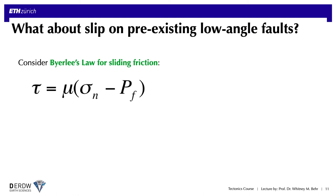Now let's think about the possibility of reactivating existing misoriented faults. We know that many extensional regimes have had an earlier tectonic history, perhaps dominated by thrust faults. So maybe these normal faults are pre-existing weaknesses that become reactivated once extension initiates.